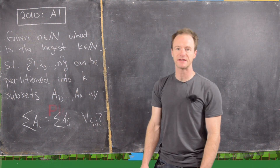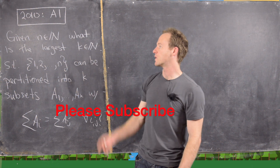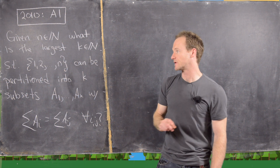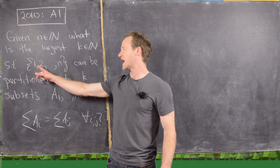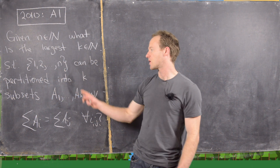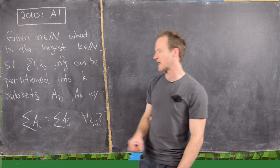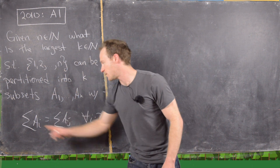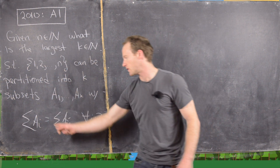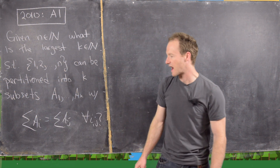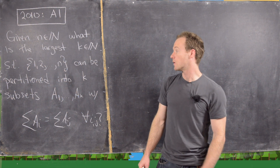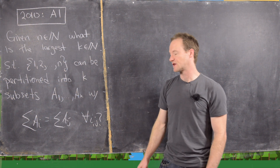Let N be some natural number, and we want to answer the question: what is the largest K, which will also be a natural number, such that the set {1, 2, 3, ..., N} can be partitioned into K subsets A1 through AK, where the sum of the elements in each subset is the same? So the sum of Ai equals the sum of Aj for all i, j. We want to find the largest such K.